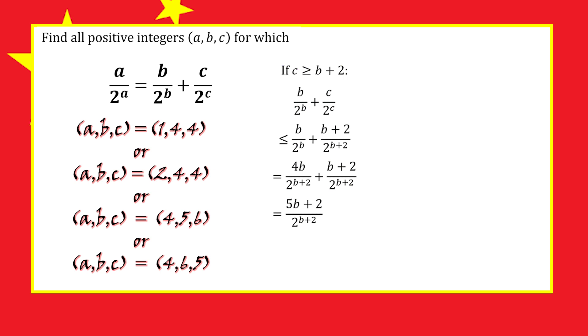But the next larger number in the list, b minus 1 over 2 to the b minus 1, is equivalent to 8b minus 8 over 2 to the power of b plus 2, which is always greater than our sum for all b greater than 3. This rules out any more solutions.